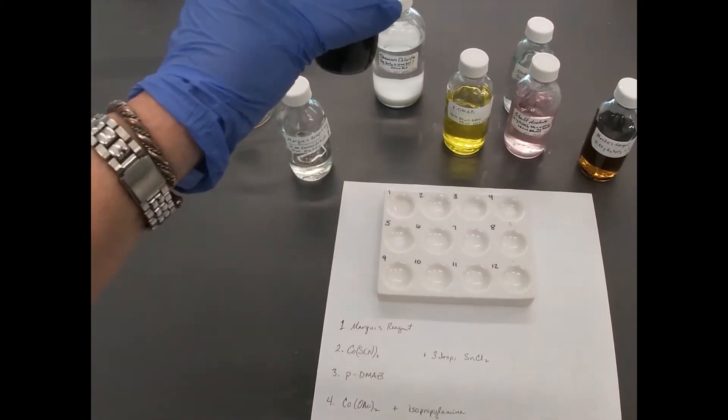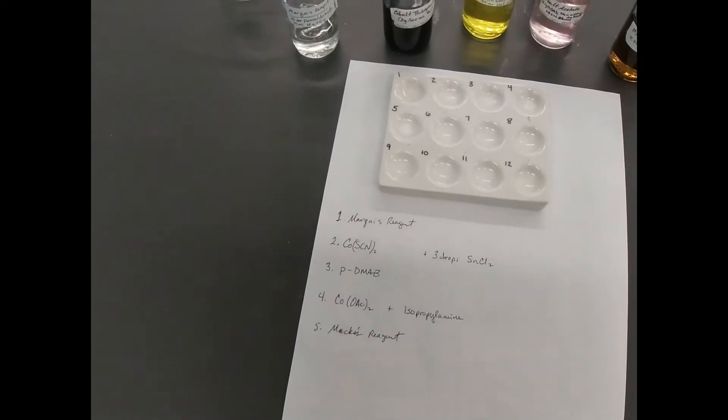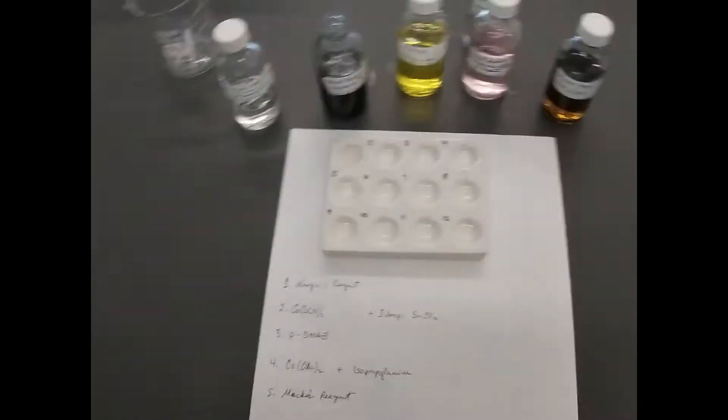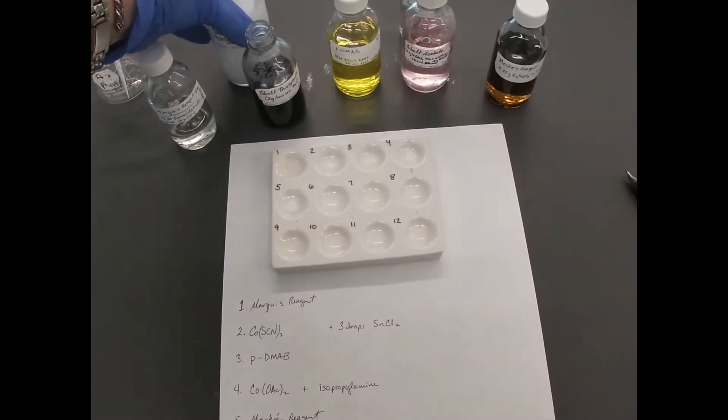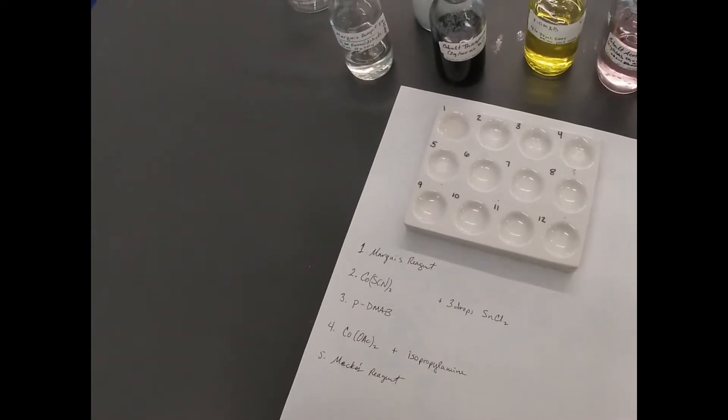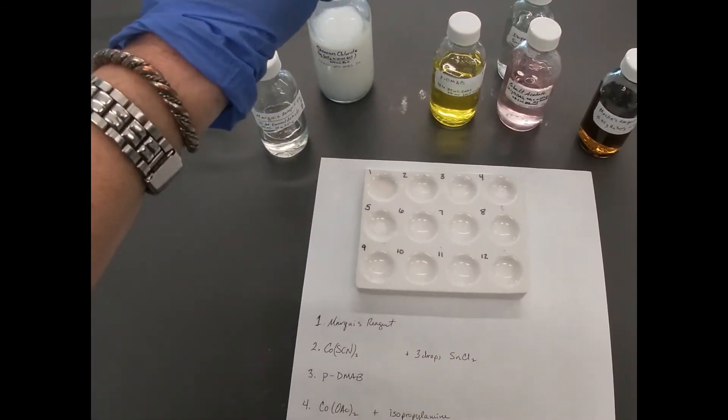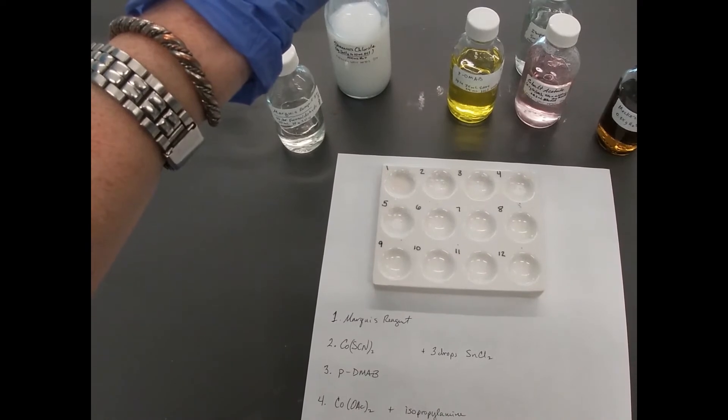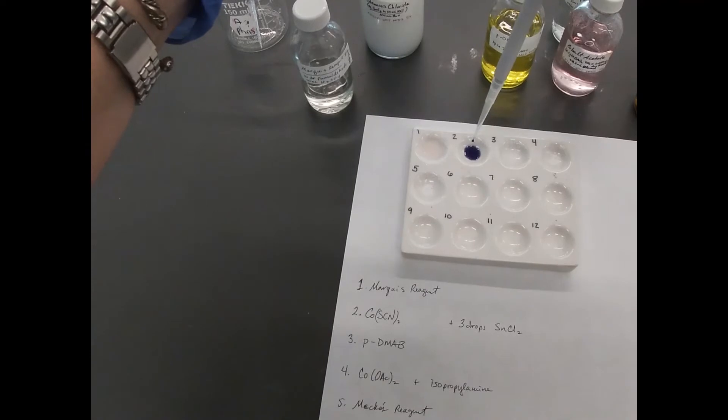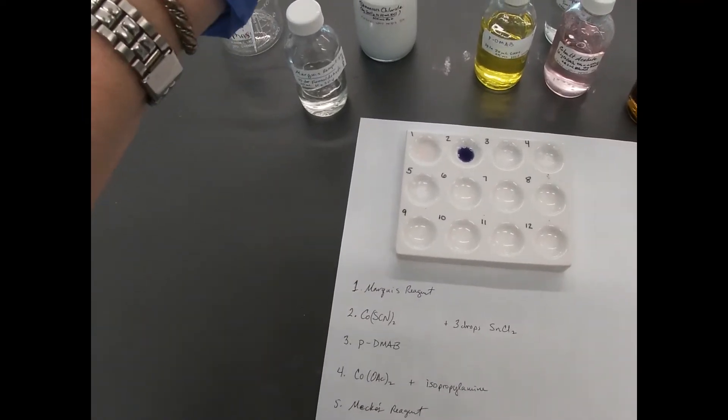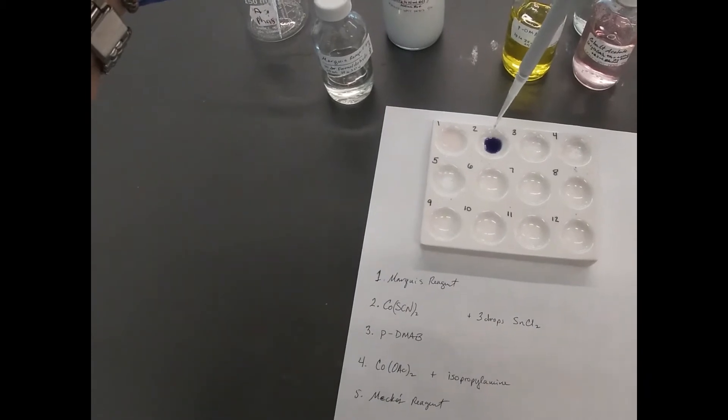So number two is cobalt thiocyanate. We may also need some of our stannous chloride. Let me shake that up. I'm sure that looked crazy on the camera. So we'll take our cobalt thiocyanate and add some drops. That's number two.